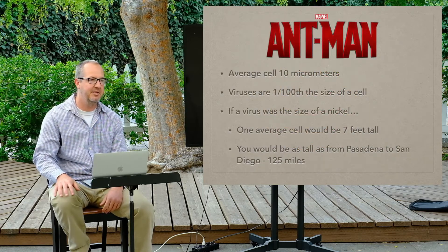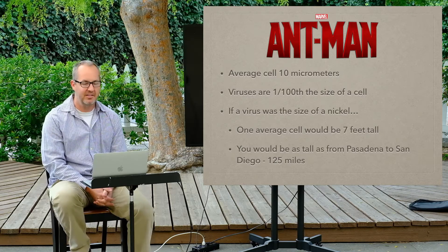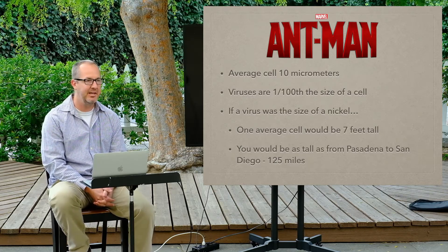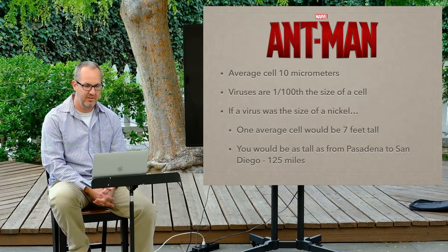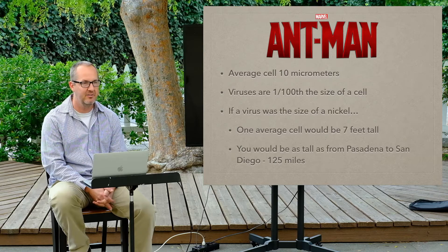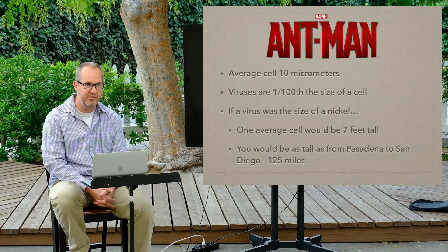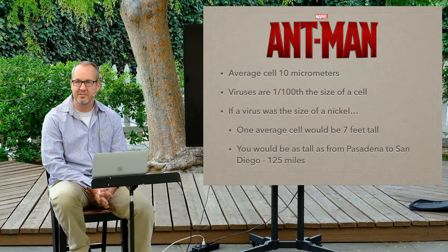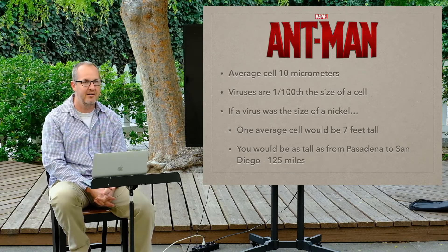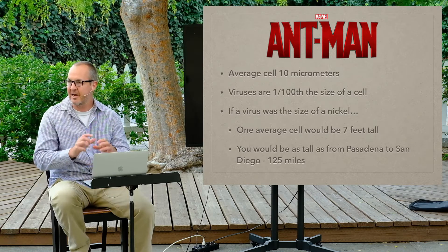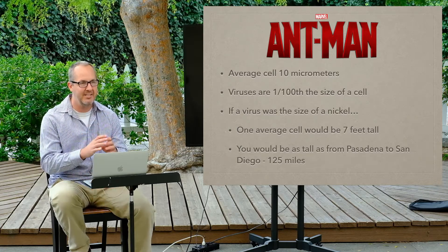We're going to play a little Ant-Man — Marvel Comics. The average cell is 10 micrometers, which probably doesn't mean anything to you. Viruses are one-hundredth the size of a cell. So if the virus is the size of a nickel, then one cell would be seven feet tall. And the human body — about 100,000 cells — would be the size of from here to San Diego. A nickel-sized virus is taking down a here-to-San Diego-sized body. This is tiny, tiny, tiny.